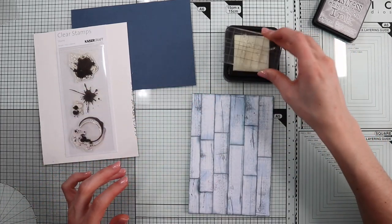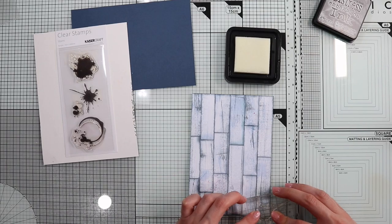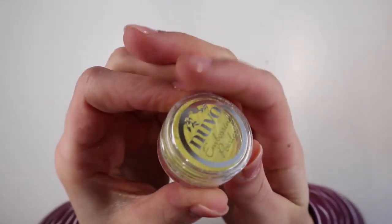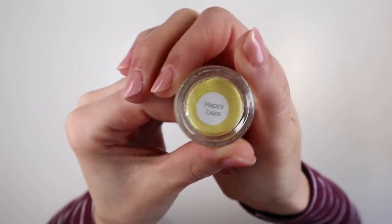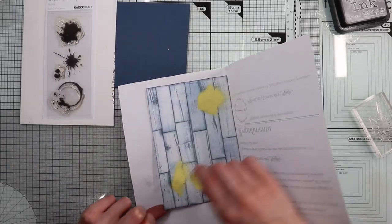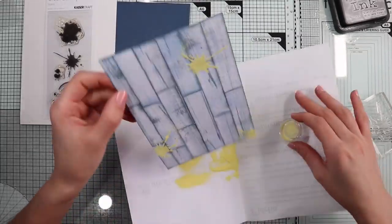I'm using clear ink because, as you may have already guessed, I'm going to heat emboss with the pastel yellow embossing powder included in the kit.